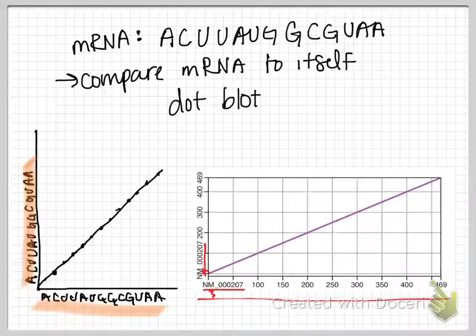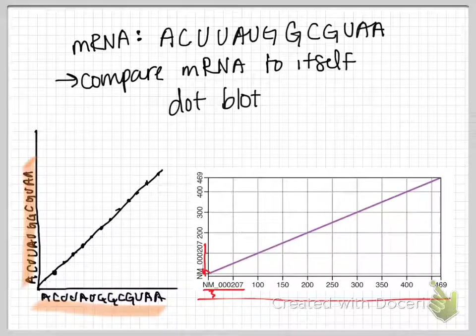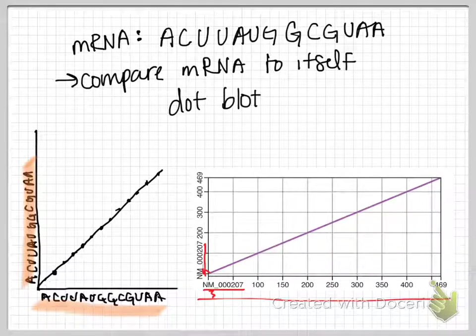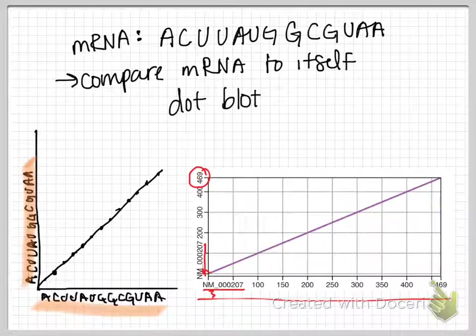Since these sequences are so long, when the dots are so close to each other, they basically look zoomed out like a diagonal line. Another clue that we can see that these are the same two sequences is they have the same lengths.